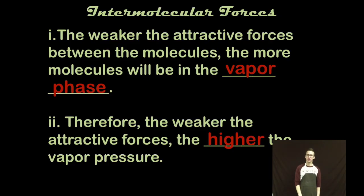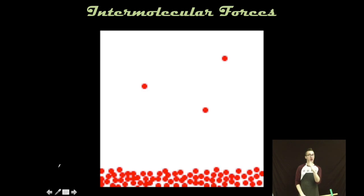And the weaker the attractive forces between the molecules in your substance, the more those molecules will be in the vapor phase. Therefore, the weaker the attractive force is, the higher the vapor pressure. So as you take a look at the image on your screen, let's say this substance is in dynamic equilibrium between its liquid and vapor phases. Not a whole lot of the substance has gone from the liquid to the vapor phase. In other words, the intermolecular forces of attraction are fairly strong because they're holding one another in the liquid phase.